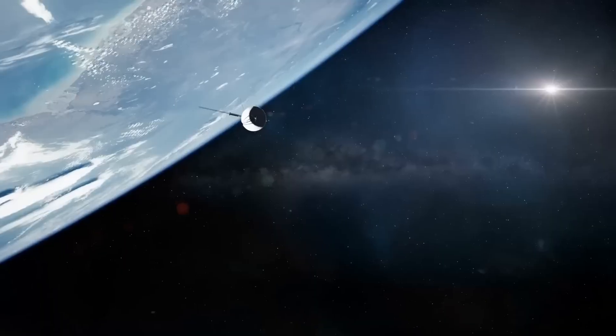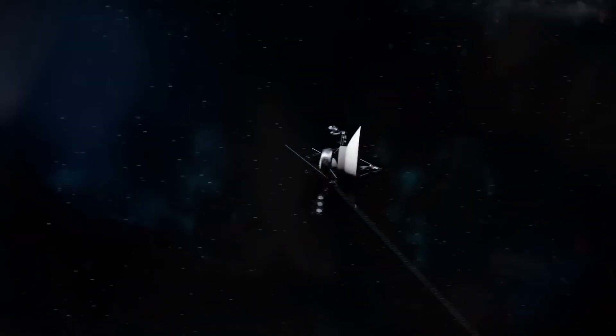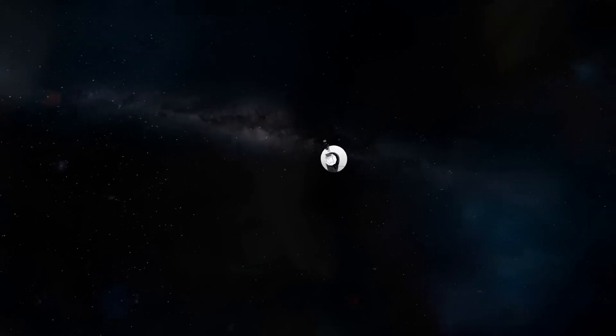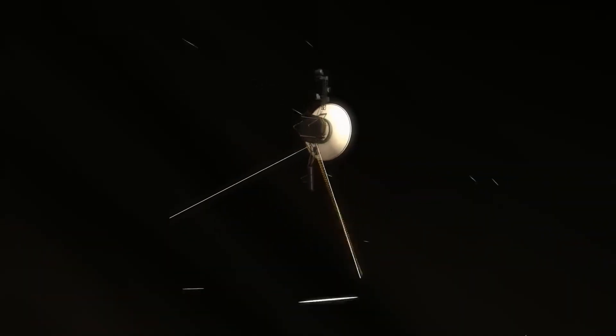Scientists are confused because the information coming from the system that controls Voyager 1's operations does not in any way match the spacecraft's recent activities. What could this impossible discovery be? And what is the way forward?